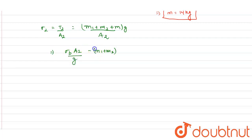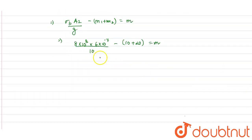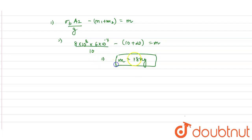From here we can calculate m: m = (σ_b × A2 / g) − (m1 + m2). Substituting the values: σ_b = 8 × 10⁸, A2 = 6 × 10⁻⁷ m², g = 10 m/s², m1 = 10 kg, m2 = 20 kg. From here we get m = 18 kg.